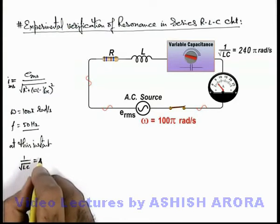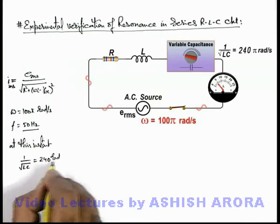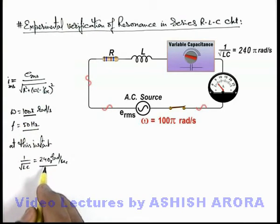is equal to 240π radians per second. Now this is significantly higher than the frequency of alternating current.